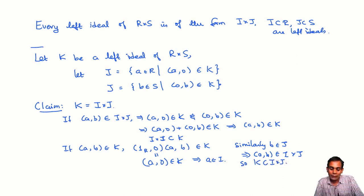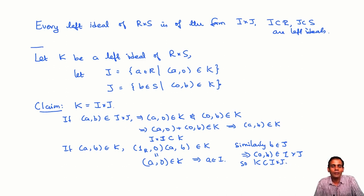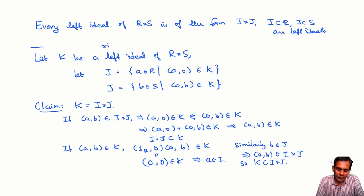So K equals I×J. What we have seen is that if you take a product of two rings, then all the left ideals of that product are products of left ideals of the two rings themselves. The same holds for right ideals or for two-sided ideals.